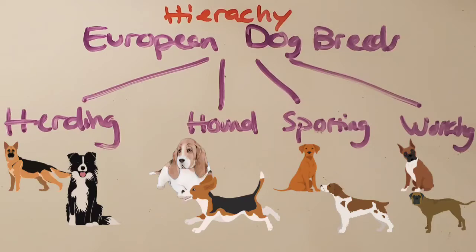The sporting dogs include Rhodesian Ridgebacks and Brittany Spaniels, and in the working group we have the Boxer and the Bull Mastiff. Hopefully that taught you a little bit about a hierarchy. It starts with the most broad term — European dog breeds — then moves to specific types like herding, hound, sporting, and working, and then into even more specific breeds like a German Shepherd.